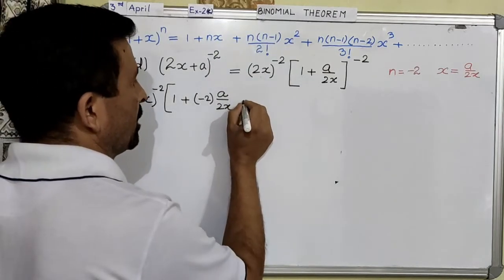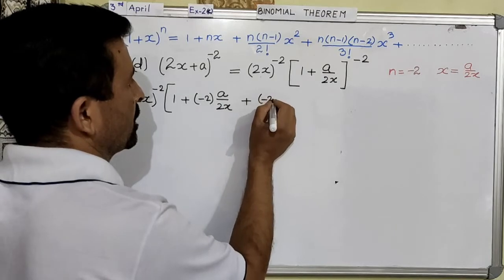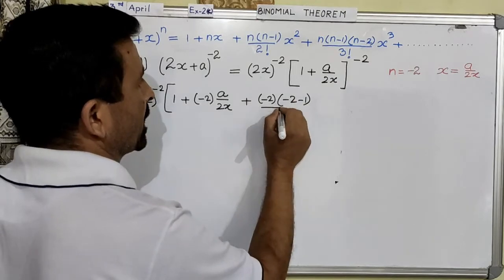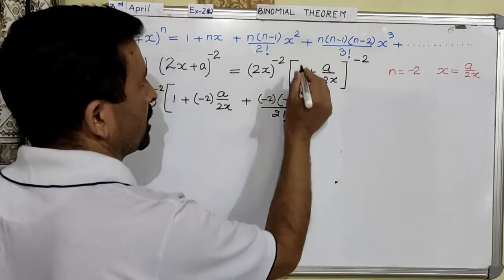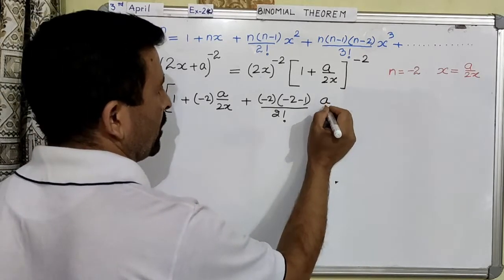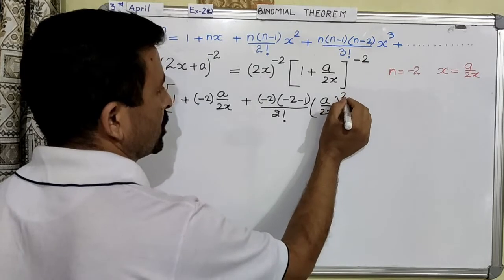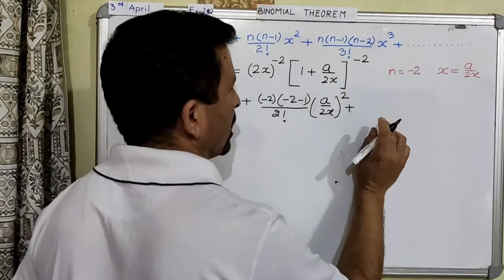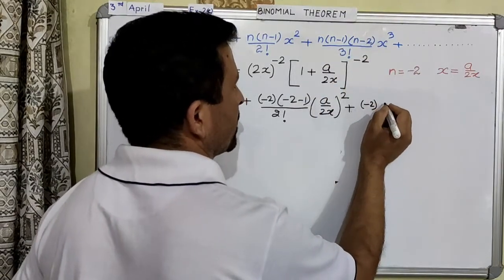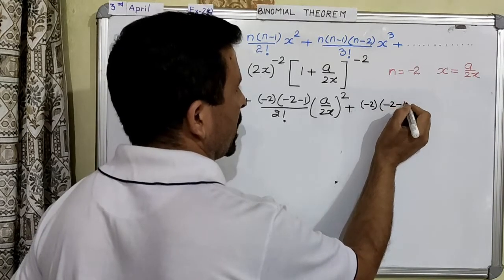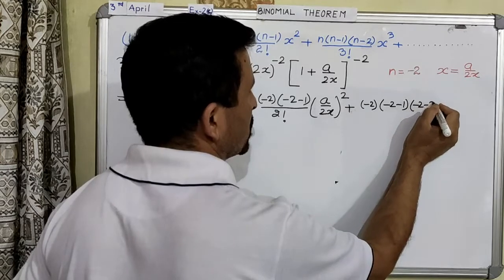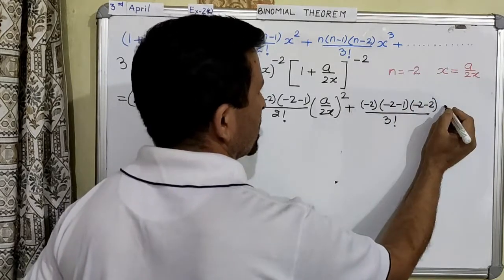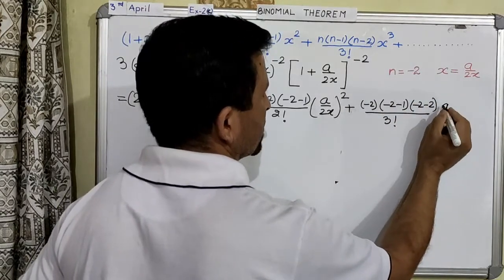Now plus n(n-1): n is negative 2, n minus 1 is negative 2 minus 1, divided by factorial 2, then x squared — and your x is a over 2x, squared. Plus n(n-1)(n-2): n is minus 2, then n minus 1 is minus 2 minus 1, then n minus 2 is minus 2 minus 2, divided by factorial 3, then x cubed — so it is a over 2x, cubed.